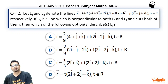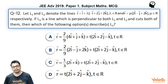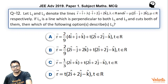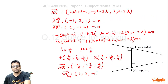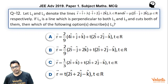Checking against the options: the vector parallel to L3 — 2 i-cap plus 2 j-cap minus k-cap — is the same in all four options A, B, C, D. So what we need to check is whether specific points lie on line L3. Point A is (8/9, 2/9, 2/9) and point B is (4/9, minus 2/9, 4/9), confirming that options A and B are correct.